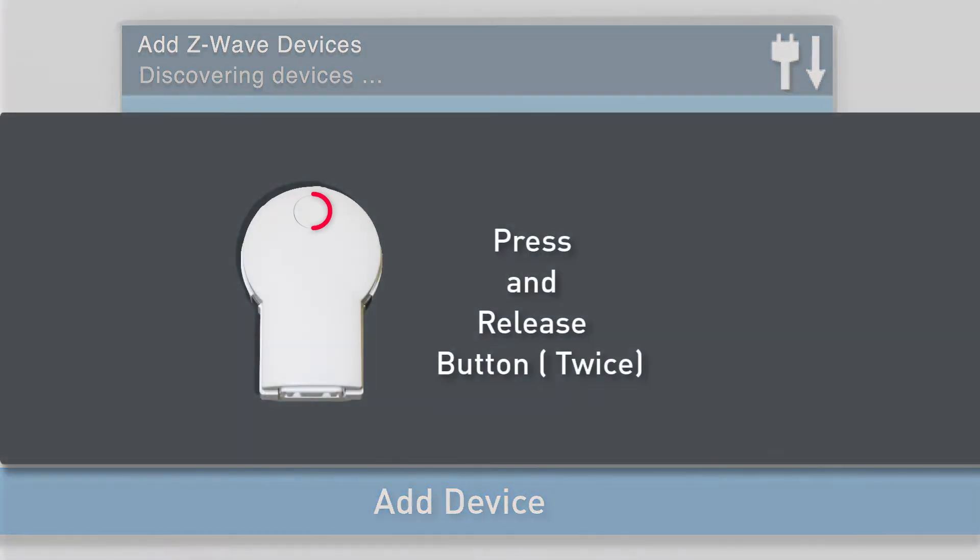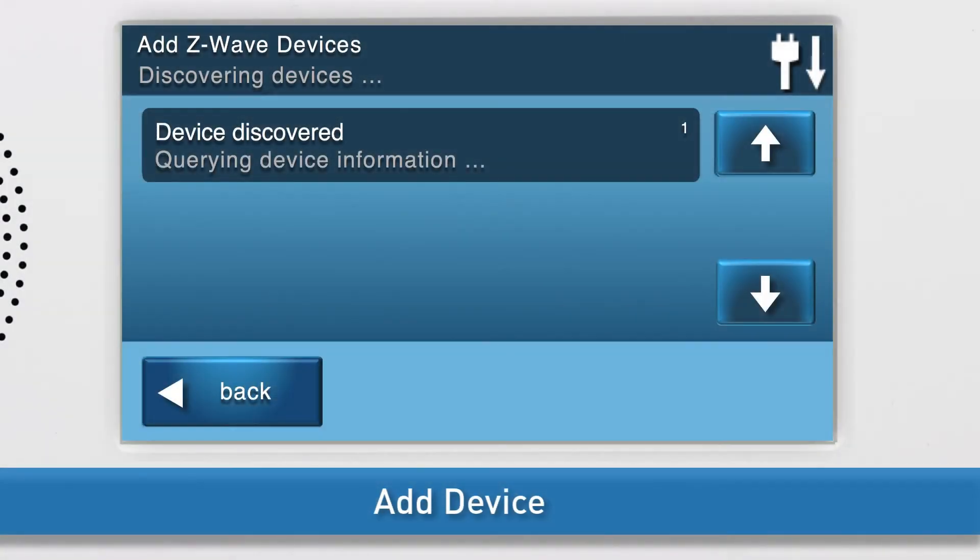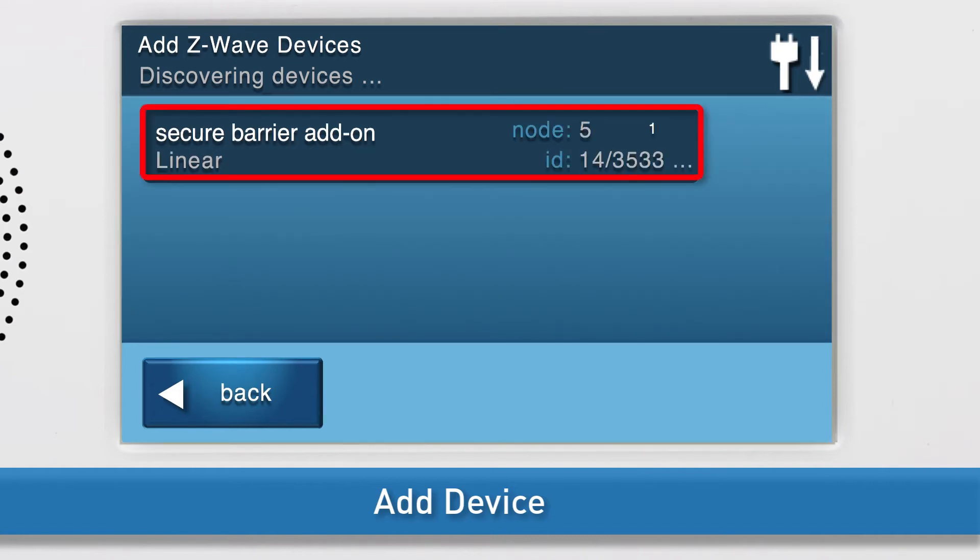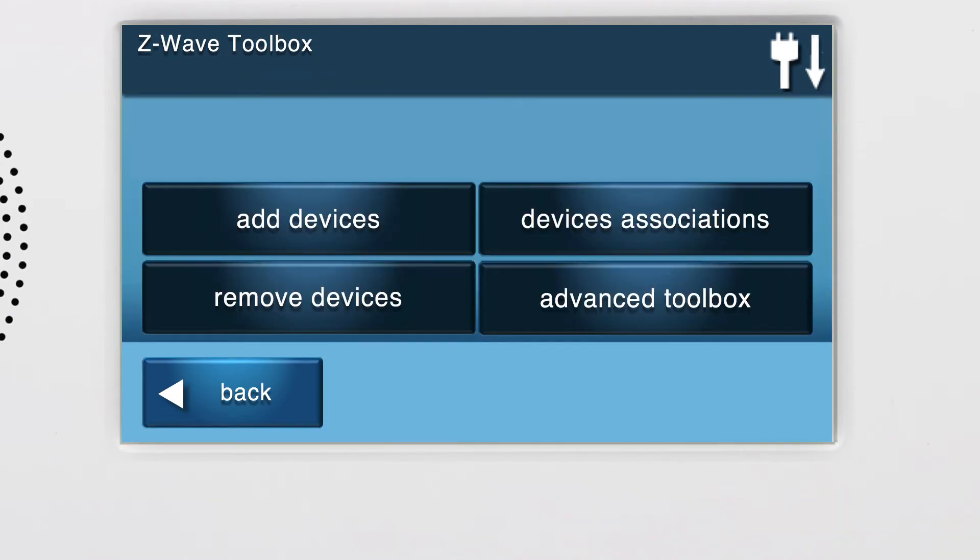Press and release the button on the front of the module twice. You will see a notification on screen that the panel is querying device information. Do not exit the screen until you see the details for the Lamp Module controller display. Press Back to return to the Z-Wave Toolbox.